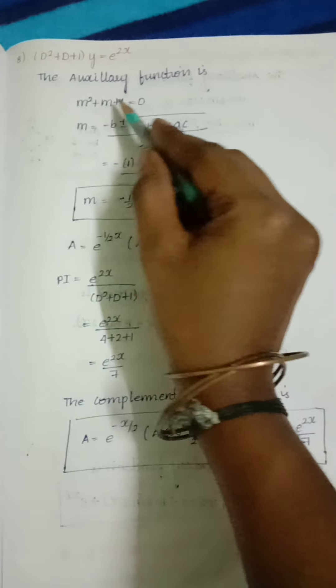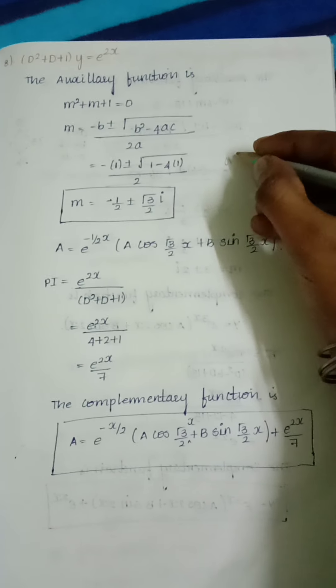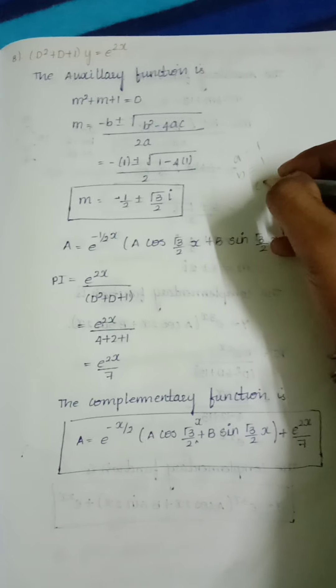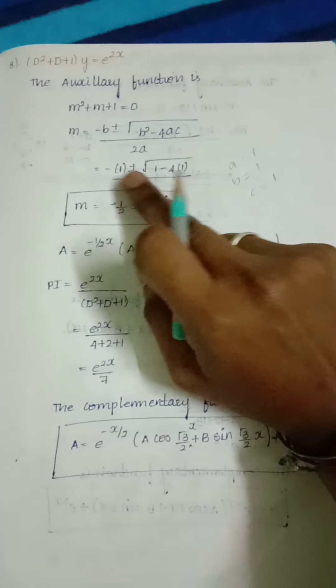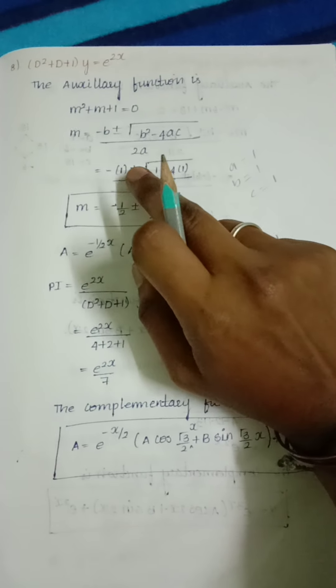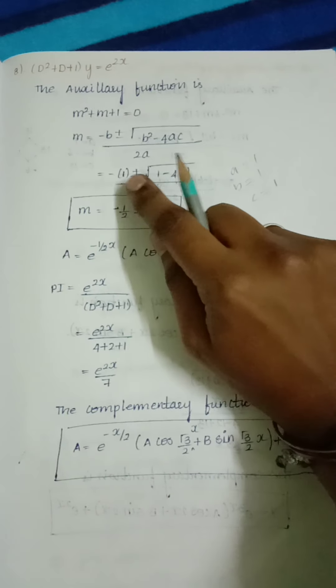Here from this equation we can find out what is a, b, and c: a equals 1, b equals 1, and c also equals 1.